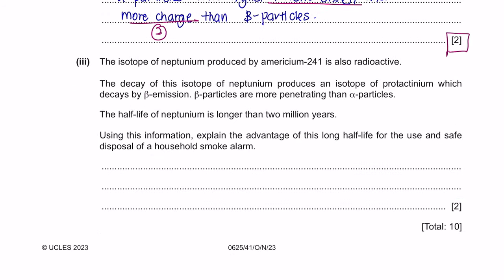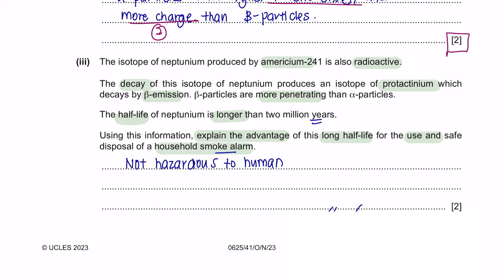Part 3: The isotope of neptunium produced is also radioactive, and its decay produces an isotope of protactinium which decays by beta emission. Beta particles are more penetrating than alpha particles, and the half-life of neptunium is longer than 2 million years. One advantage of this long half-life is that it is not hazardous to humans, as alpha particles have few emissions per unit time.